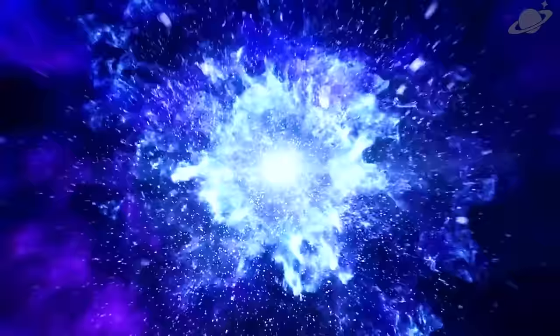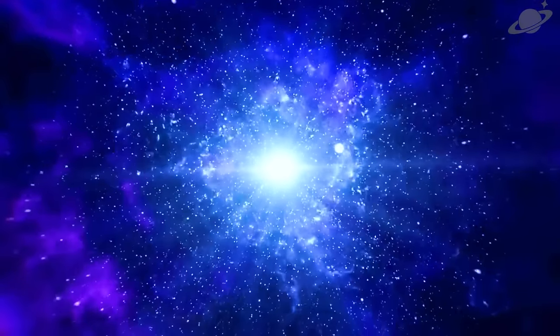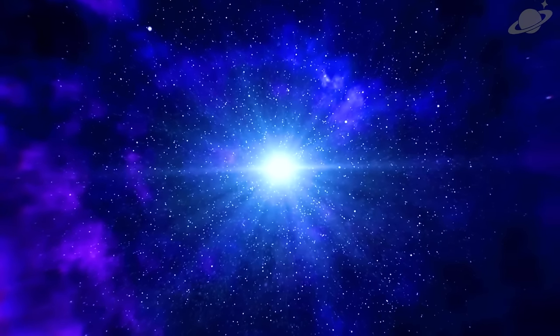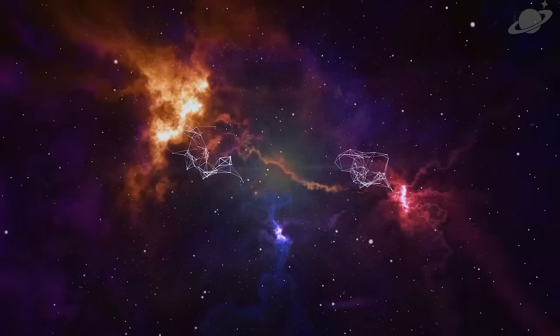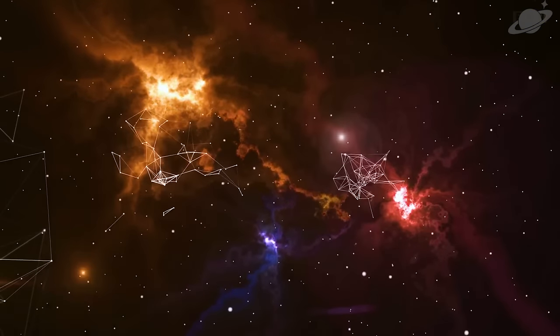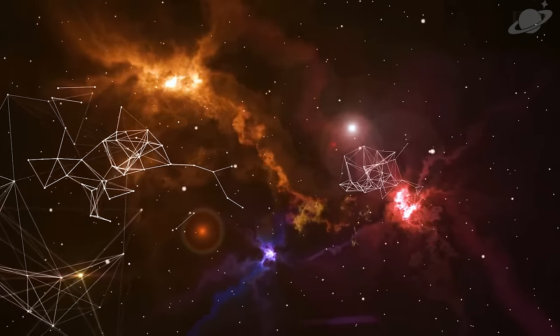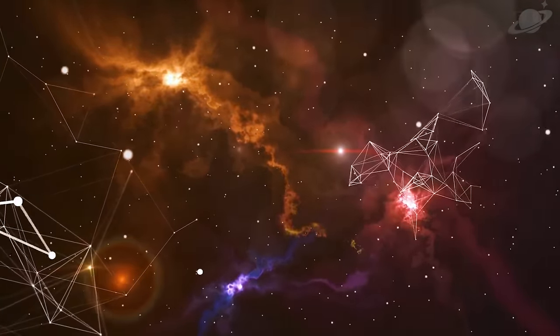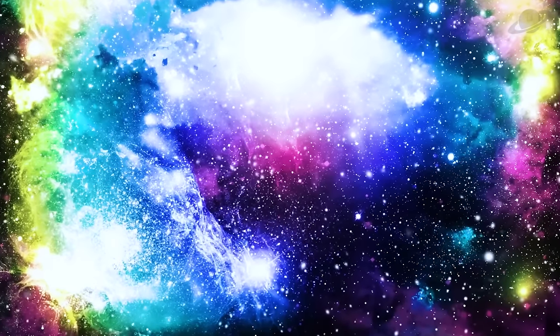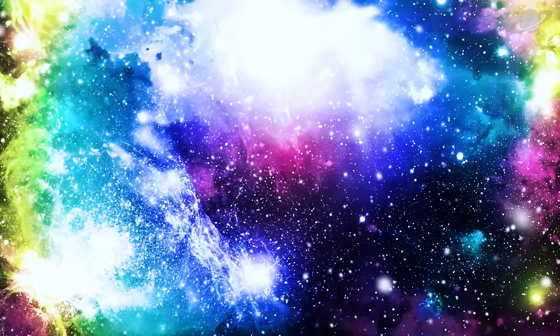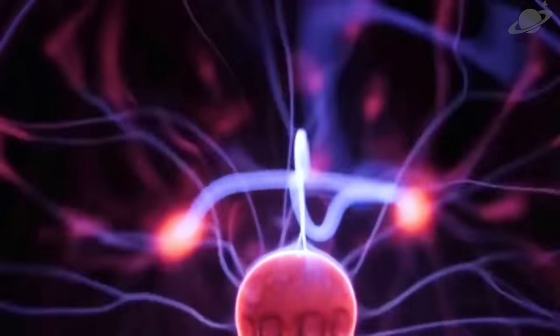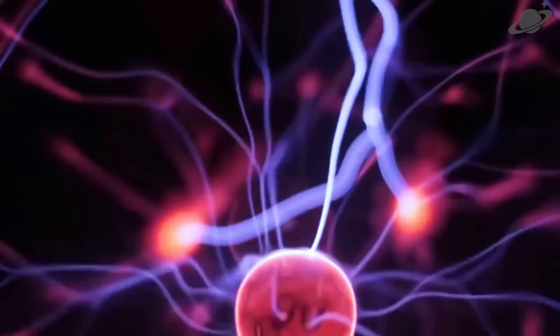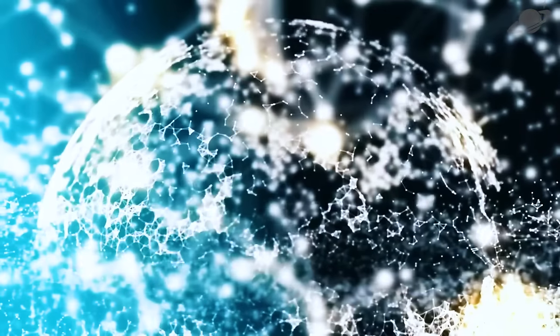Then we have quark-gluon plasma. In the moments immediately following the Big Bang, the temperature of the universe soared to between 7 trillion and 10 trillion degrees Fahrenheit, or 4 trillion and 6 trillion degrees Celsius. At such extreme temperatures, quarks, fundamental particles typically confined within protons and neutrons, were liberated to move freely. These quarks joined with gluons, carriers of the strong nuclear force, forming a primordial soup known as quark-gluon plasma. This dense, hot medium permeated the entire universe during its early stages.